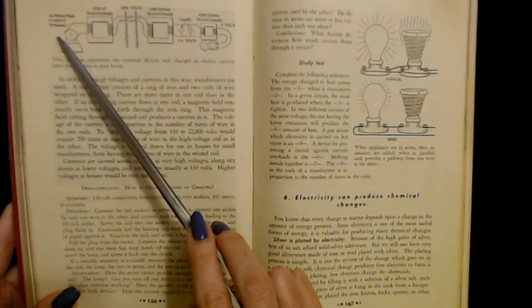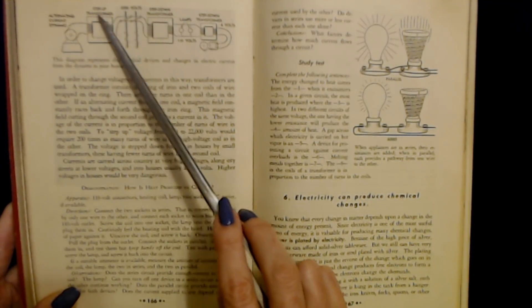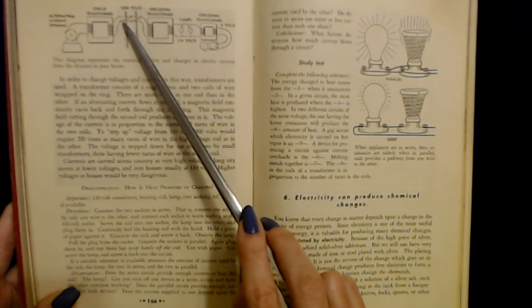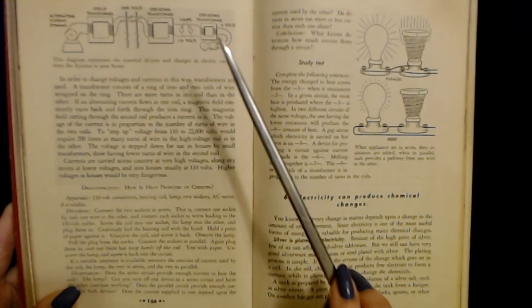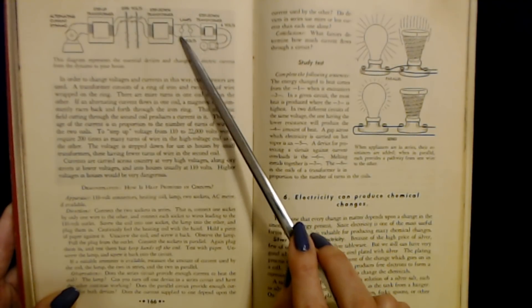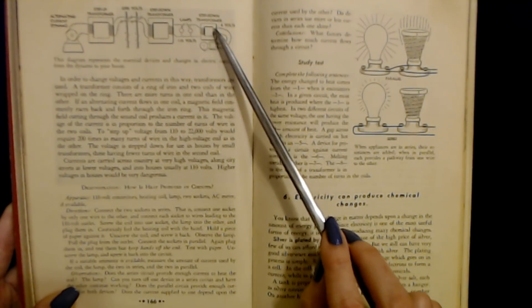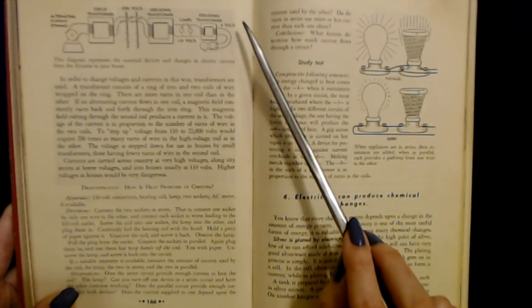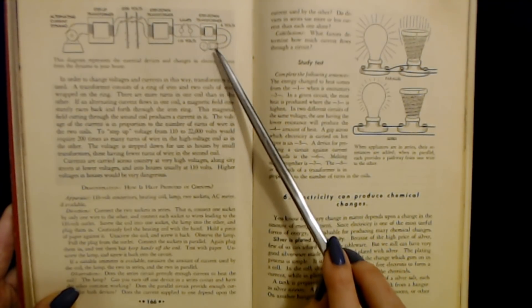Now this diagram represents the essential devices and changes in electric current from the dynamo to your house. Here we have the alternating current dynamo, the step-up transformer, 2200 volts, a step down transformer, lamps at 110 volts, and another step down transformer to 6 volts for the doorbell.